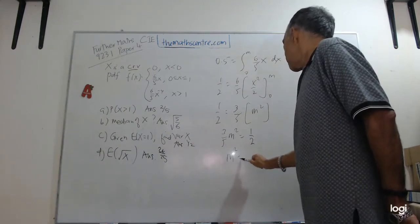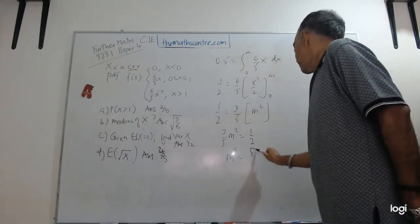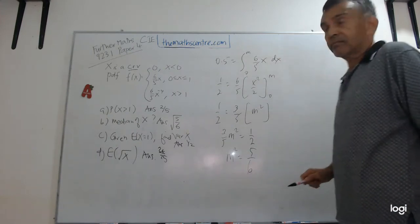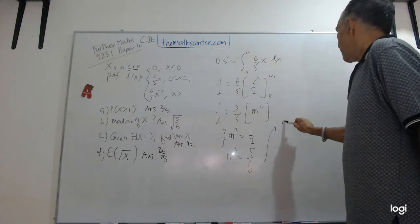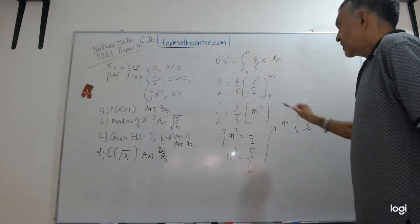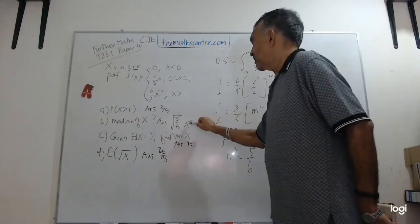therefore, M squared will be 5 over 6. 5 over 6, therefore, your M will be the square root of 5 over 6, as you can see here.